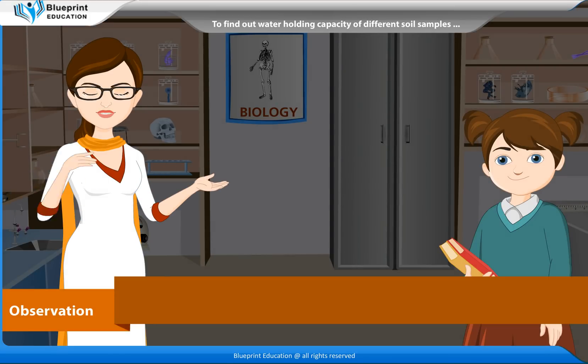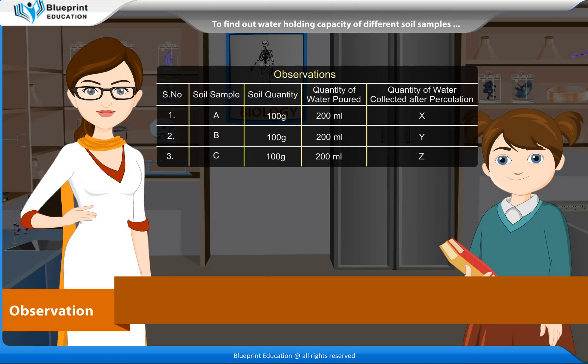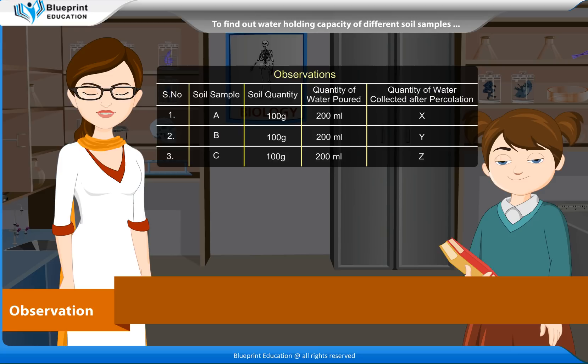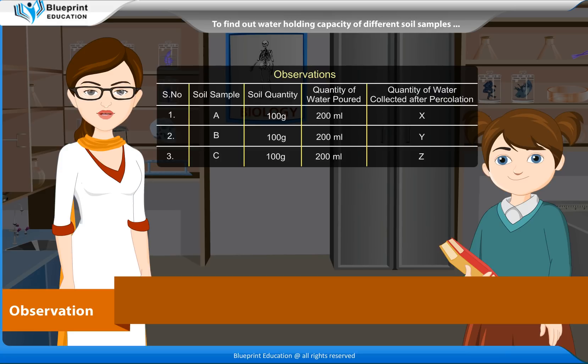Observation: Record the serial number, soil sample type, soil quantity, quantity of water poured, and quantity of water collected after percolation in a table.